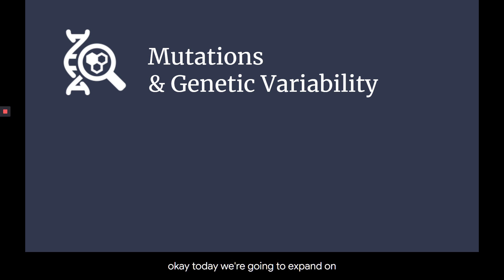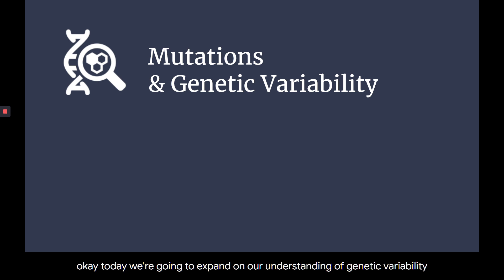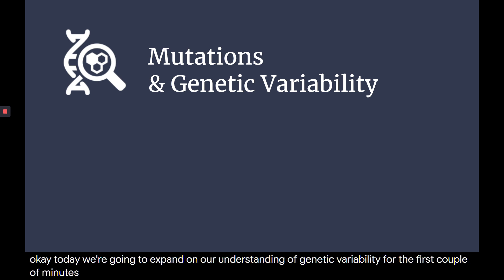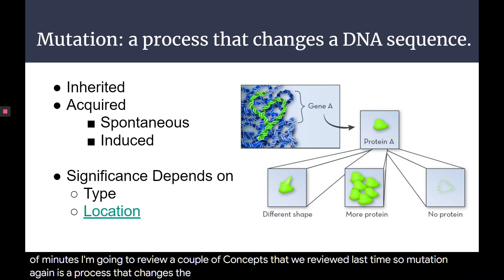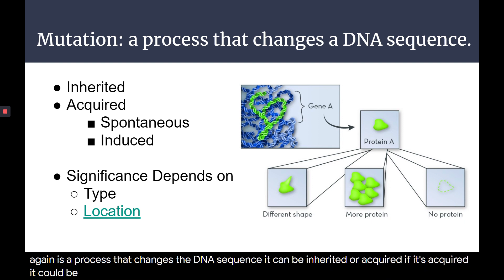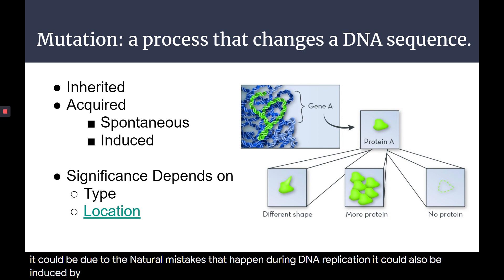Today we're going to expand on our understanding of genetic variability. For the first couple of minutes, I'm going to review a couple of concepts that we reviewed last time. So mutation is a process that changes the DNA sequence. It can be inherited or acquired. If it's acquired, it could be due to the natural mistakes that happen during DNA replication. It could also be induced by the environment.